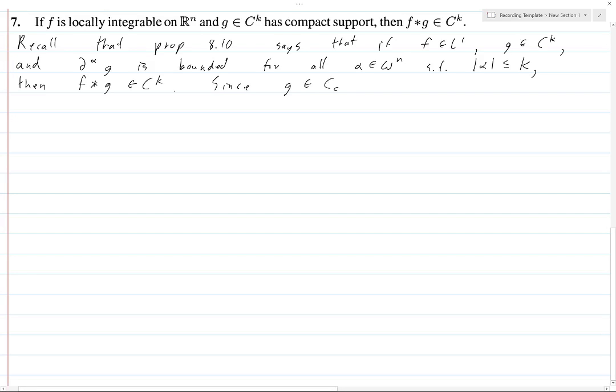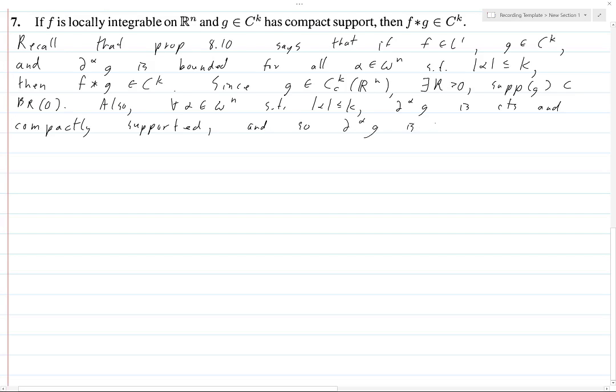Since g is in C_c^K(R^n), there exists some R greater than 0 such that the support of g is contained in B_R(0). That's just because the support is compact and compact sets are bounded. Also, for all α in ω^n such that |α| is less than or equal to K, D^α g is continuous and compactly supported, and so D^α g continuous on a bounded set means uniformly continuous and bounded.